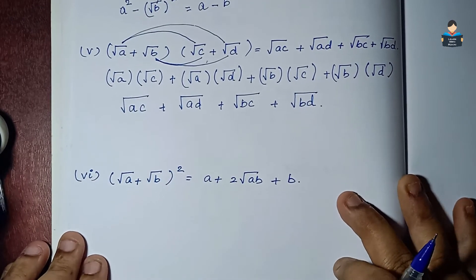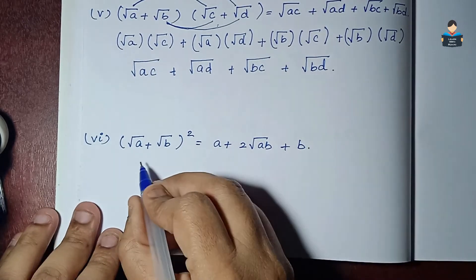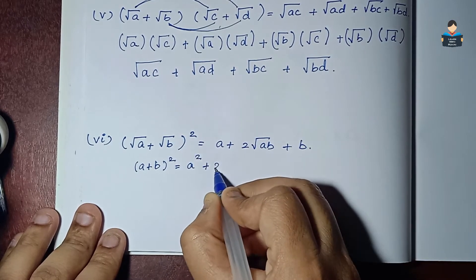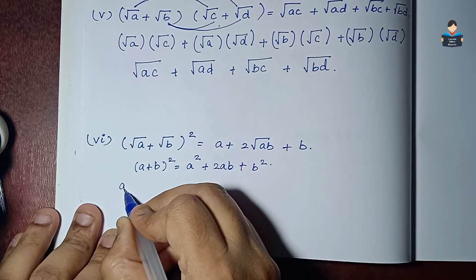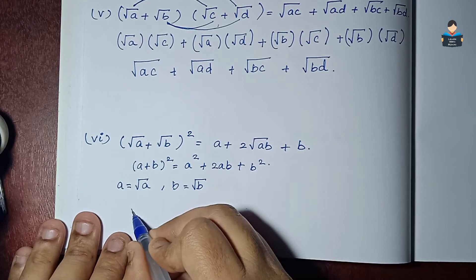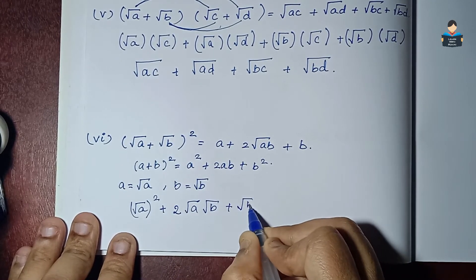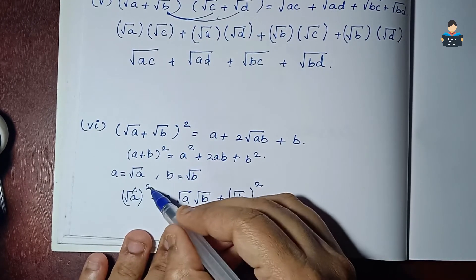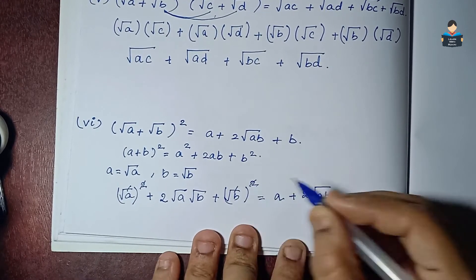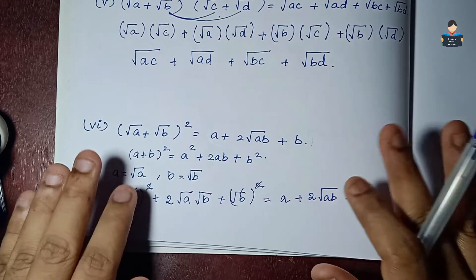The sixth identity: (√a + √b)², using the formula (a+b)² = a² + 2ab + b². Substituting, we get (√a)² + 2·√a·√b + (√b)², and since square root and square cancel, this equals a + 2√(ab) + b. These are all the key identities we will use to solve problems.